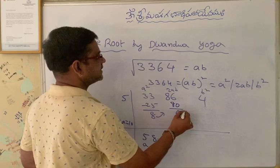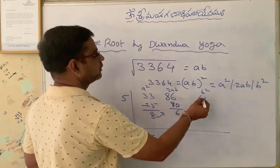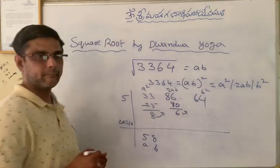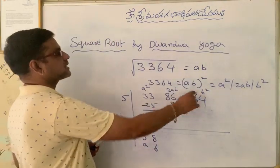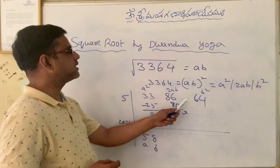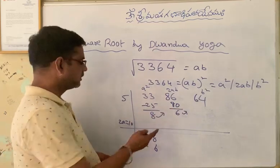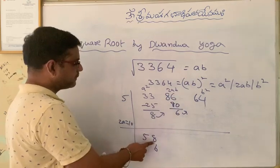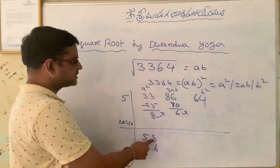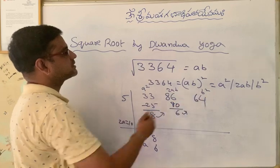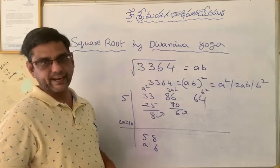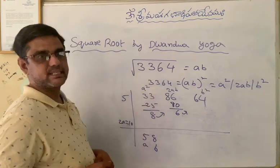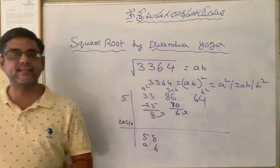The remaining 6 is carried to near 4 and written beside 4, so the total number becomes 64. The last term is B square, which is 64. We need to verify: B is 8, so B square is 64, and here also B square is 64. So the square root of 3364 is 58.